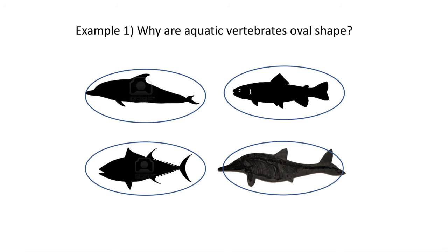Have you ever noticed how aquatic vertebrates such as fish, dolphins, and even extinct marine reptiles like ichthyosaurs look kind of similar? They're all sort of oval in shape. Could there be some functional reason for this similarity?